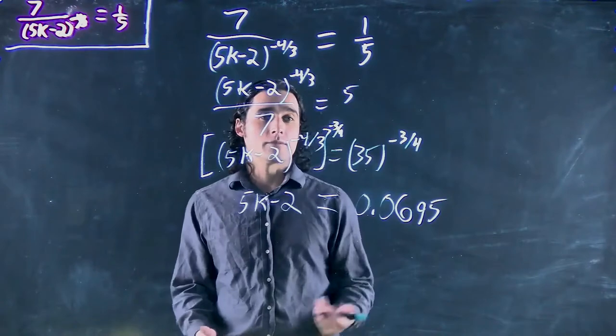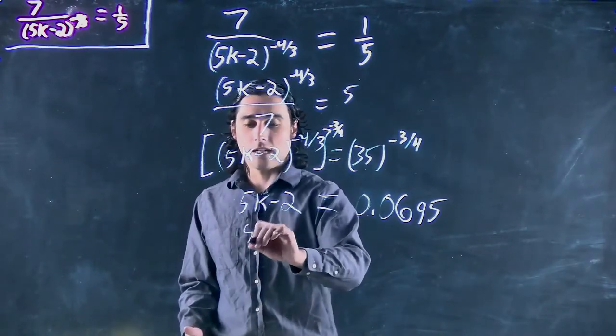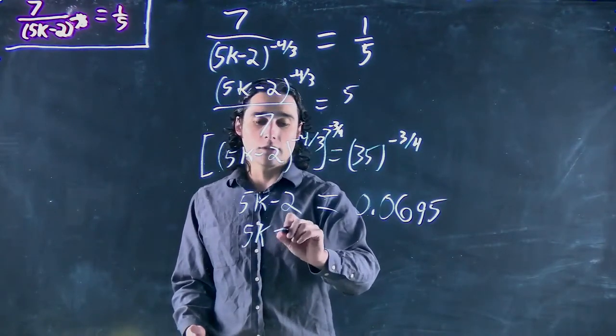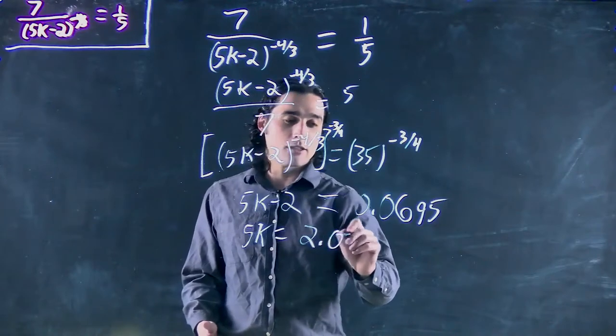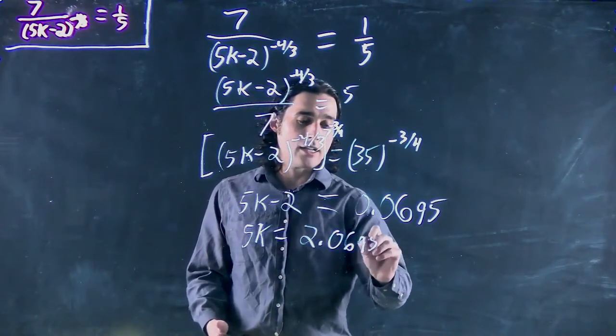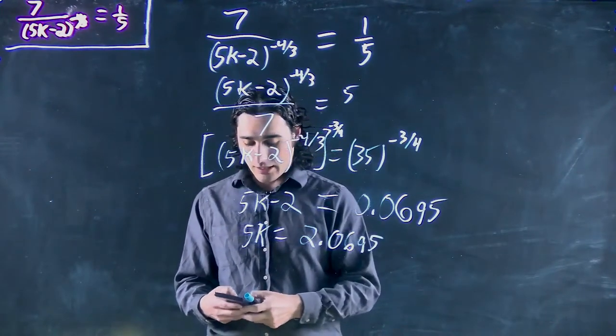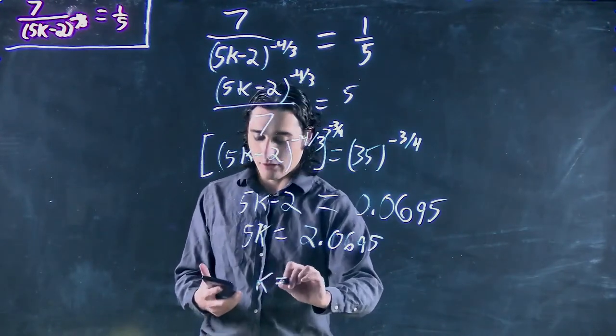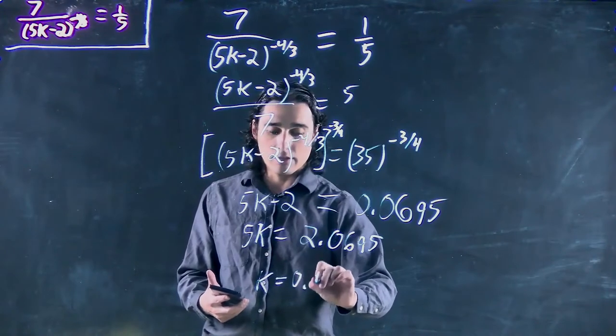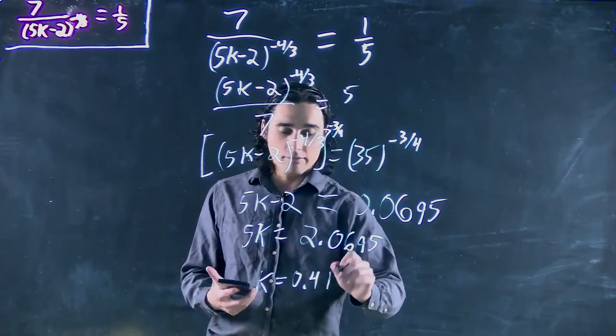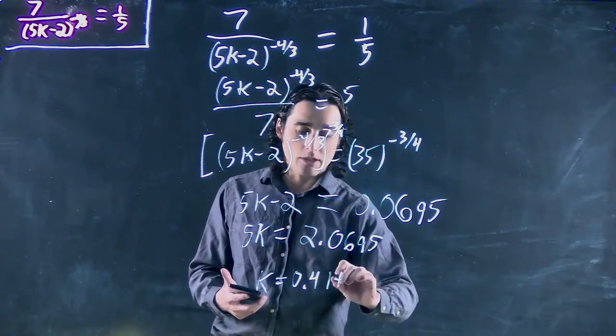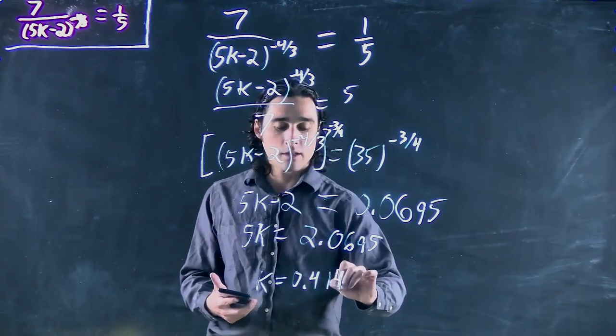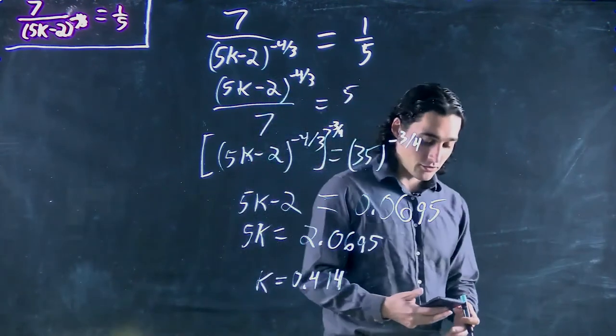Now we solve for k. 5k equals 2.0695. Divide by 5, and we get that k is roughly 0.414, and that should be the answer to our problem.